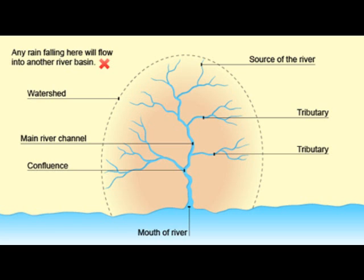Watershed: the area of land drained by a river, and the edge of highlands surrounding a drainage basin. It marks a boundary between two drainage basins.